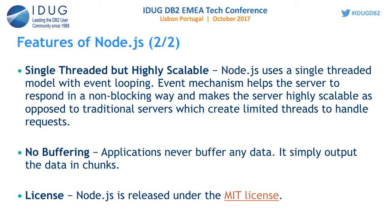Node.js runs on the V8 engine, which is known for its speed, making it very fast in execution. Node.js itself is single-threaded. Most languages like Java and C++ are multi-threaded, supporting multi-threading to scale applications so they can handle multiple requests concurrently.